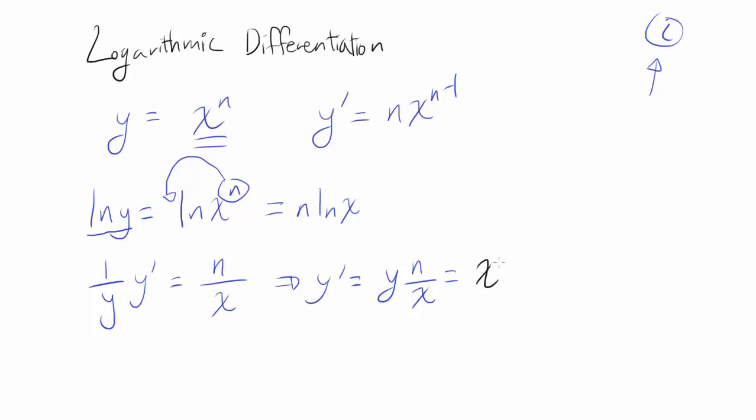So we know y prime is x to the nth times n over x. And this thing is same thing as, you have n times x to the n, and you're taking away 1, because this thing is x to the first power.